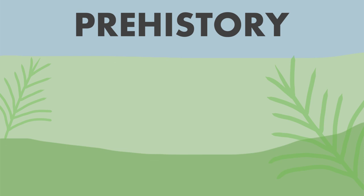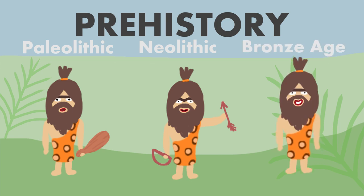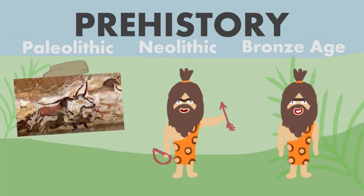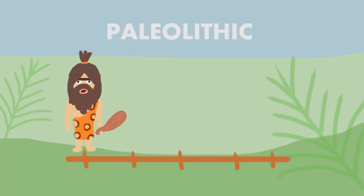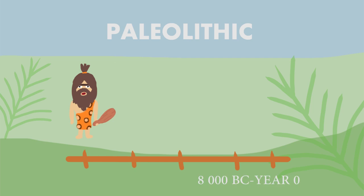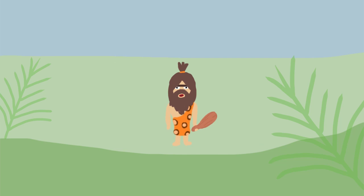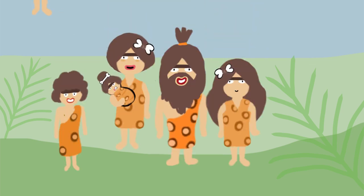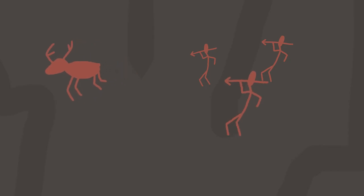Prehistory is divided into three different periods: Paleolithic, Neolithic, and Bronze Age. Each age has a particular art form that they developed. The Paleolithic began with the appearance of the first human beings and ends 8,000 years before Christ. People during that time had a nomadic lifestyle, constantly moving from one place to another to search for food and hunt for animals. They lived in tribes and sought refuge in caves, where you can see all these beautiful cave paintings today.